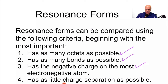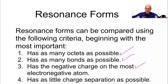Number four: as little charge separation as possible. You want to keep opposite charges close together — a positive and a negative close together is a good thing. If you have two positive charges, get them as far apart as you can. Same thing for two negative charges — getting like charges as far apart as possible is better.